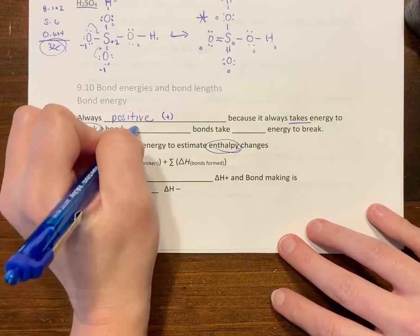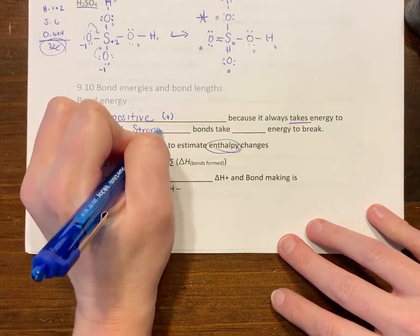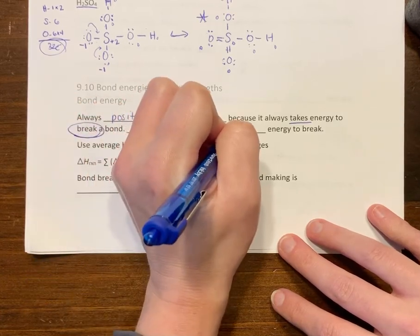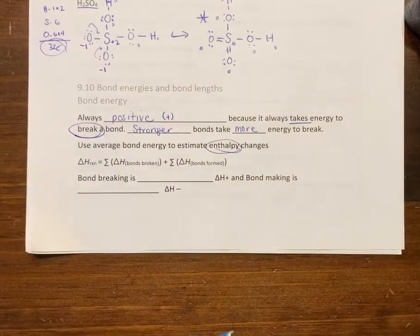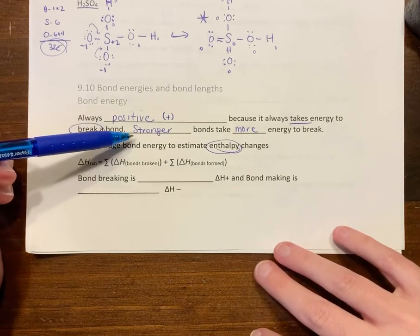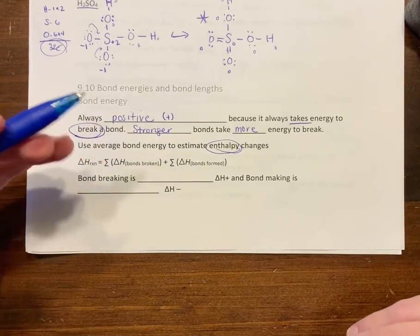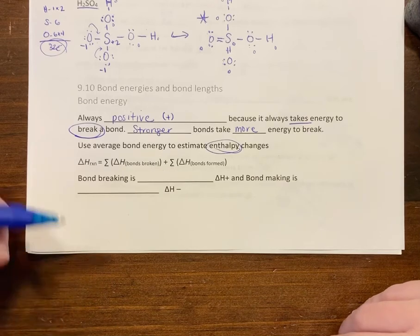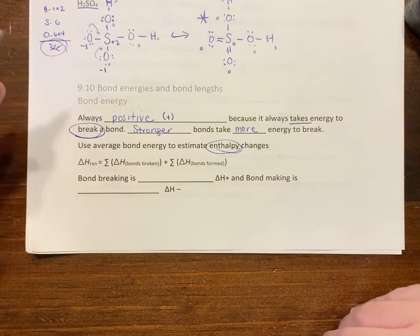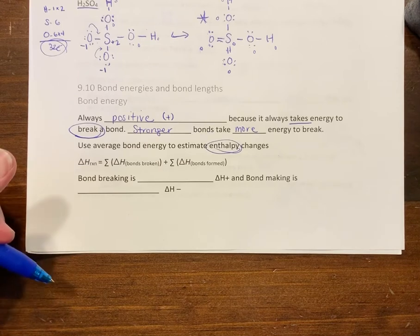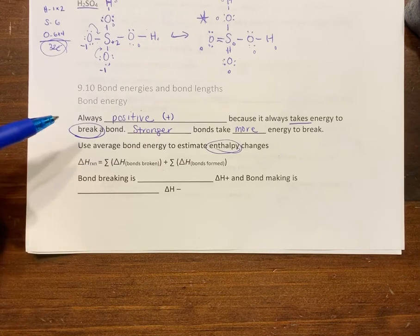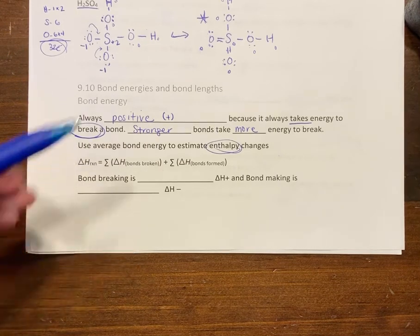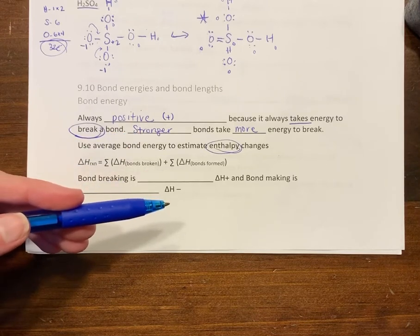If you have a stronger bond, it's going to take more energy. Single bonds are the longest ones, triple bonds are the shortest ones, and triple bonds are the strongest ones. As you add more bonds between two atoms, they get shorter and stronger, so it takes more energy.